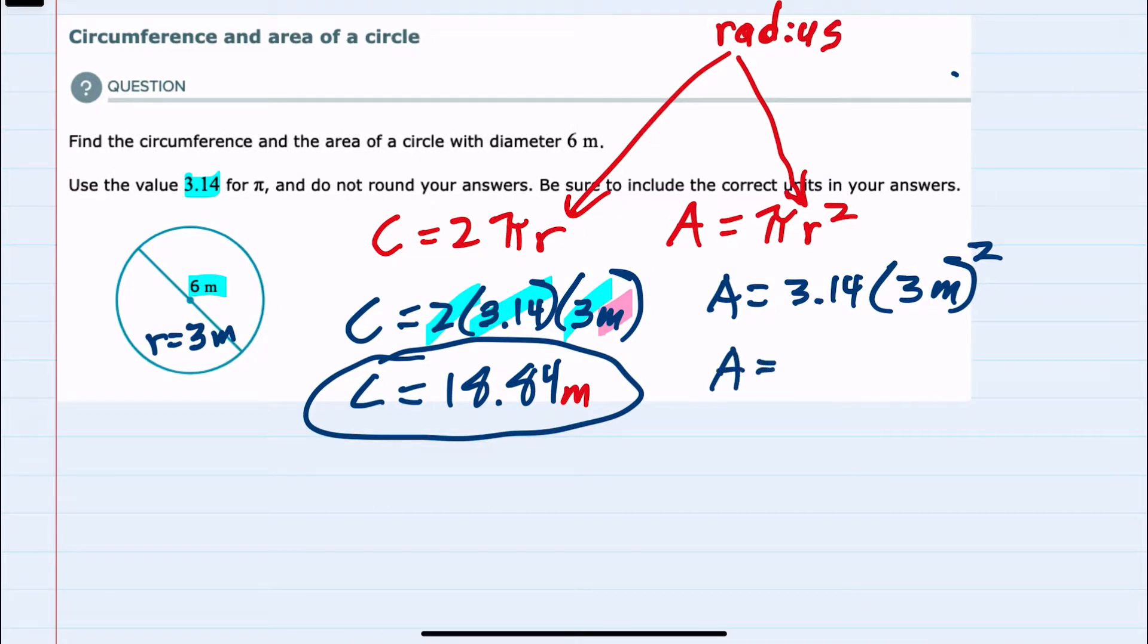Following the order of operations, we would want to do the exponents first. So 3.14 times 3 meters squared would be 9 square meters.